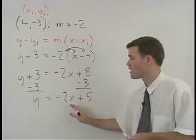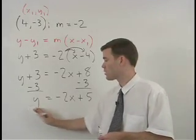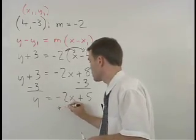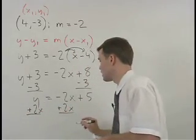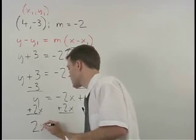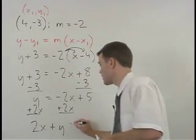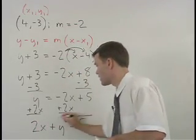Finally, we move our x term to the left side of the equation by adding 2x to both sides. And our answer is 2x plus y equals 5.